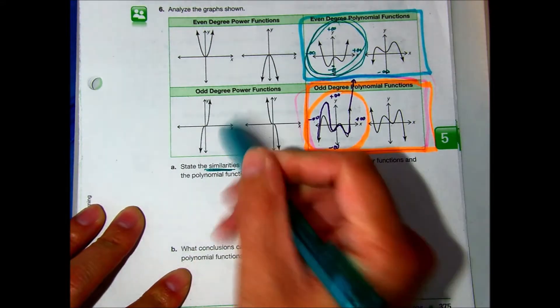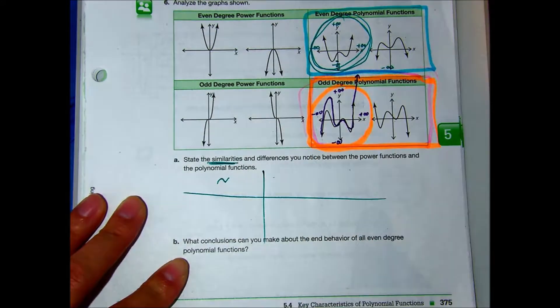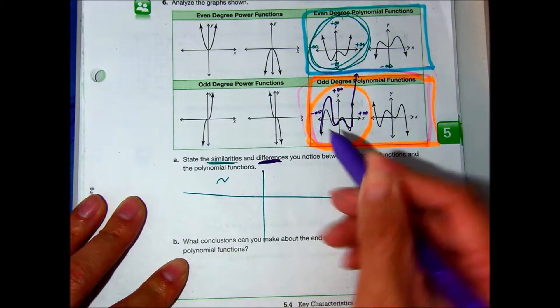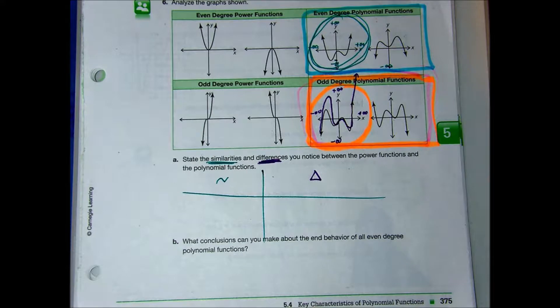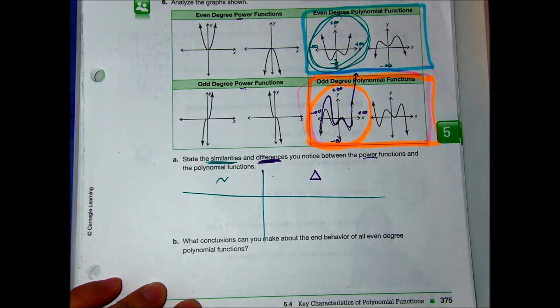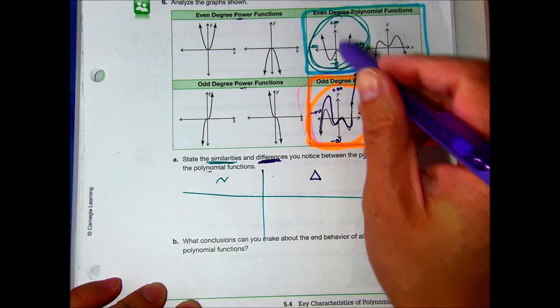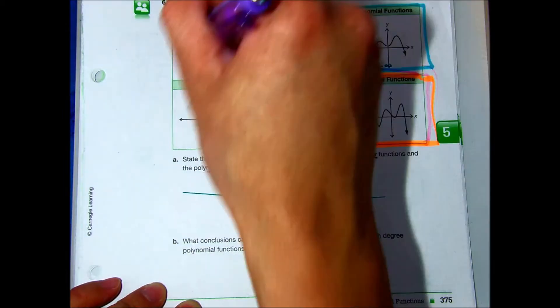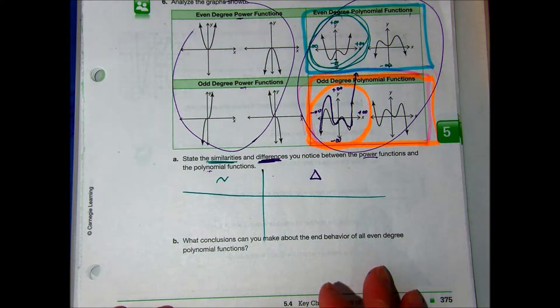So, similarities. Back in geometry, we use this symbol. And differences in your science classes, that would be a delta. Changes. And we're supposed to look at the difference between power functions and then the polynomial functions. So basically, you're comparing the left side to the right side. Does that make sense? And then let's look at B.